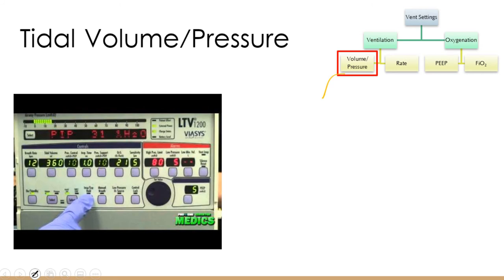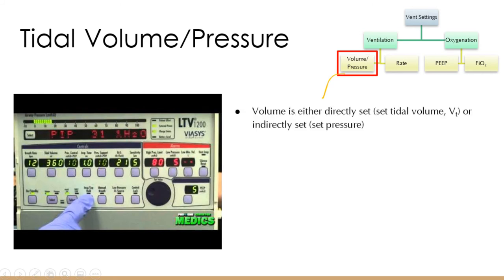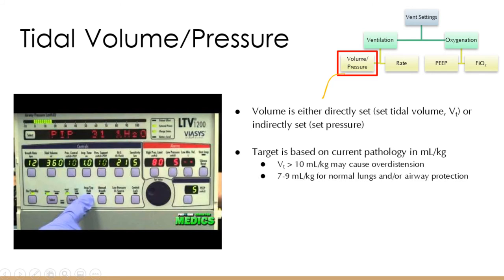Tidal volume is set directly based on current pathology in mL per kg. Seven to nine mL/kg for normal lungs or intubation for airway protection, five to seven mL/kg for acute lung processes. Don't be afraid to go with higher tidal volumes if you actually need to, especially with patients without acute lung injury. We're so used to keeping people on low tidal volumes for lung protection, but over time hypoventilation leads to significant atelectasis distally, making extubation much harder.